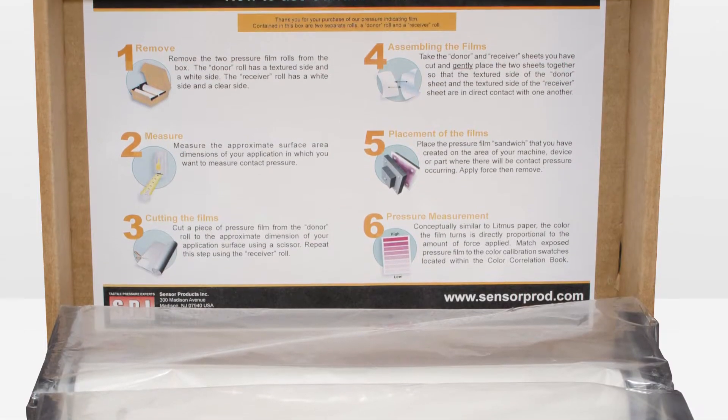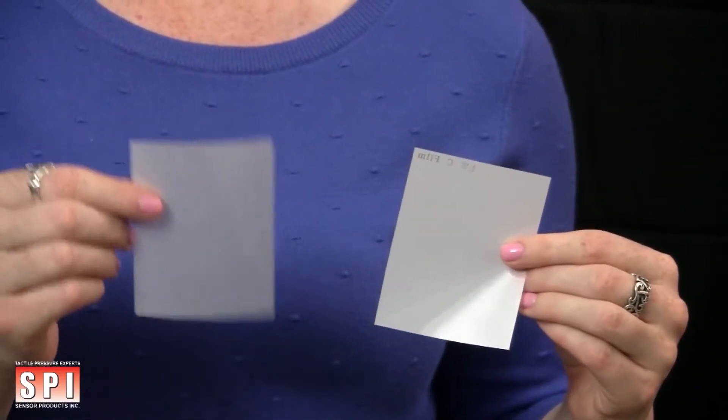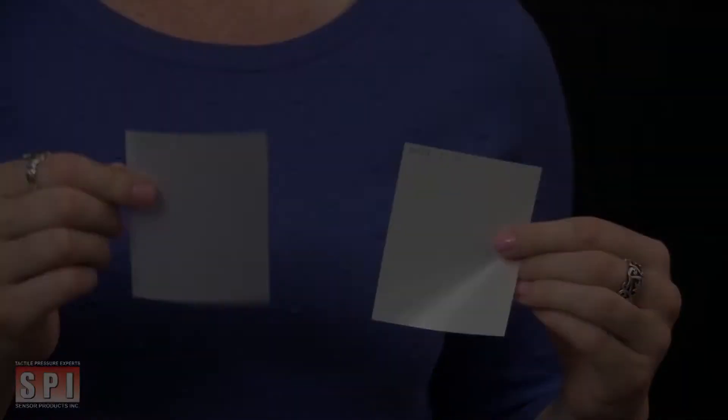Supply system, a donor, and receiver. Both the donor and receiver have a textured matte side and a glossy smooth side. The donor is only used during testing and can be discarded once complete.